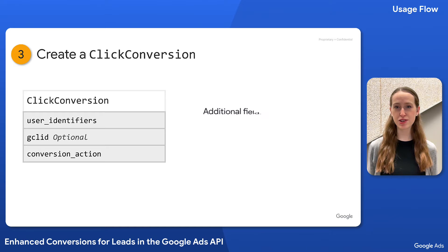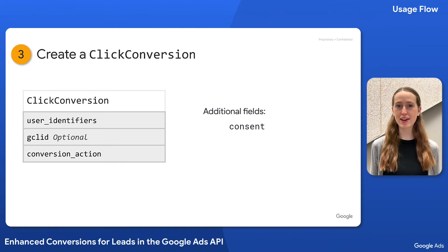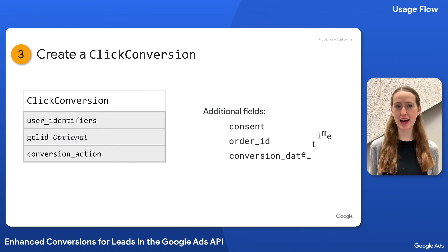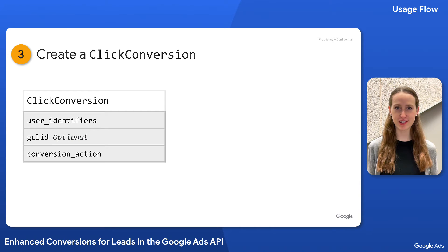There are some additional fields you can set on the click conversion to provide more information about the conversion. One is the consent field, which was added in v15 of the API — check the guide for the latest information regarding consent. You may also set order ID, which uniquely identifies a transaction, or conversion date time, which must be after the click time associated with the GCLID. Refer to the reference docs linked in the video description for a complete list of click conversion fields.